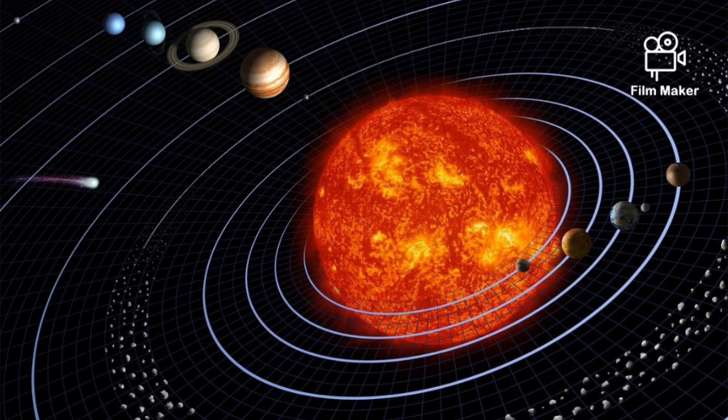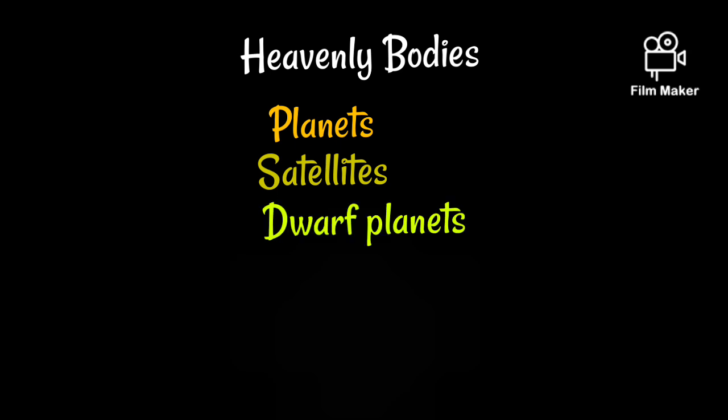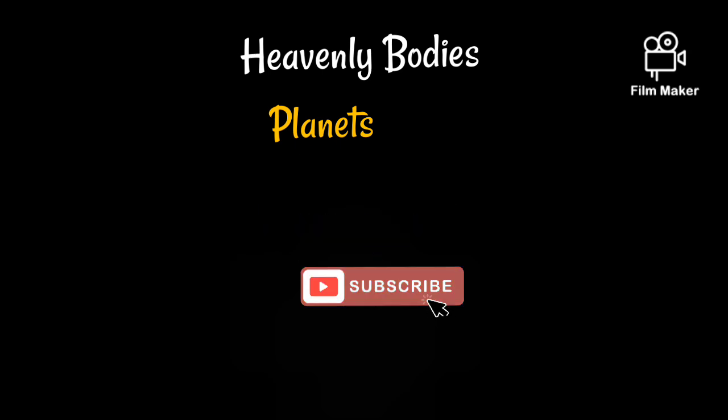In this diagram of solar system, you see the sun in the center. The heavenly bodies that revolve around it on their orbits. The planets, satellites, dwarf planets, and asteroids are all part of the solar system.